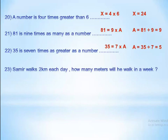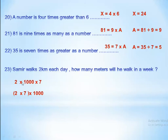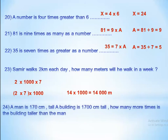Samir walks 2 kilometers each day. How many meters will he walk in a week? Convert 2 km to meters: 2 times 1,000. In a week means 7 days, so we need 2 times 1,000 times 7. Using the commutative property, rearrange to (2 times 7) times 1,000, which equals 14 times 1,000 equals 14,000 meters.